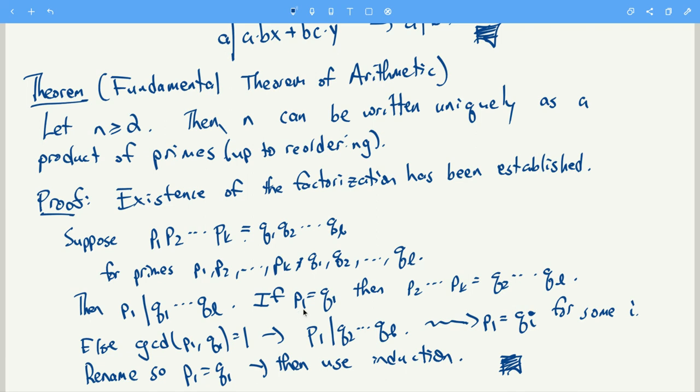All right, so why is that? Why do two different prime numbers have GCD 1? Well, if they had a common divisor that was bigger than one, this common divisor wouldn't be equal to p1, and it wouldn't be equal to one, so it would mean that p1 was not prime.